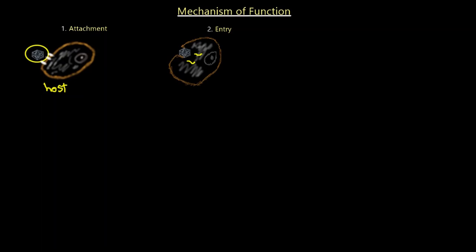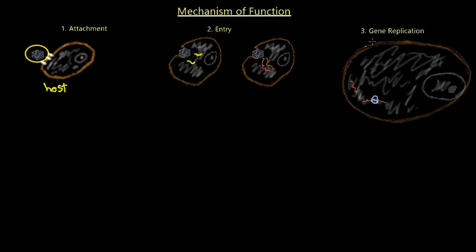Here's an example where the virus does not enter the cell but injects its DNA inside. What occurs next is gene replication. The capsid is gone, and the injected genetic material uses the host cell's machinery — including ribosomes — to reproduce and make copies of itself. Now there are three copies of the virus instead of the original one.